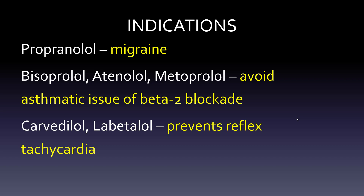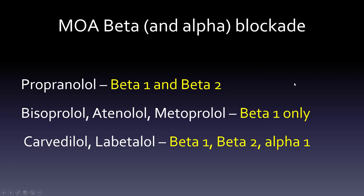Then we wanted something that might prevent reflex tachycardia. Think of carvedilol and labetalol as alpha blockers with beta blocking activity, so that when you vasodilate — which is a problem with alpha blockers like prazosin — you can prevent that reflex tachycardia because you are suppressing beta-1 receptors. So propranolol blocks beta-1 and beta-2; bisoprolol, atenolol, and metoprolol block beta-1 only; and carvedilol and labetalol block beta-1, beta-2, and alpha-1.